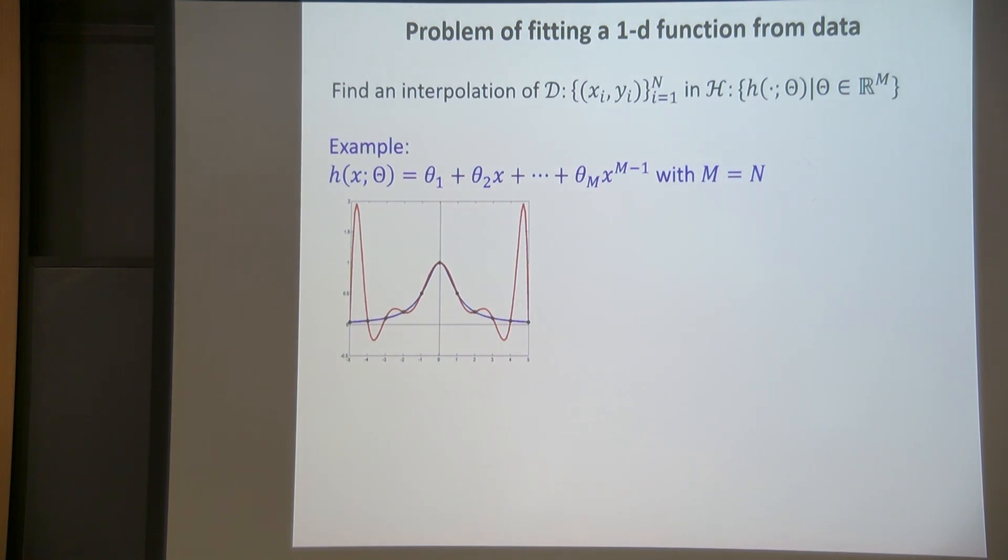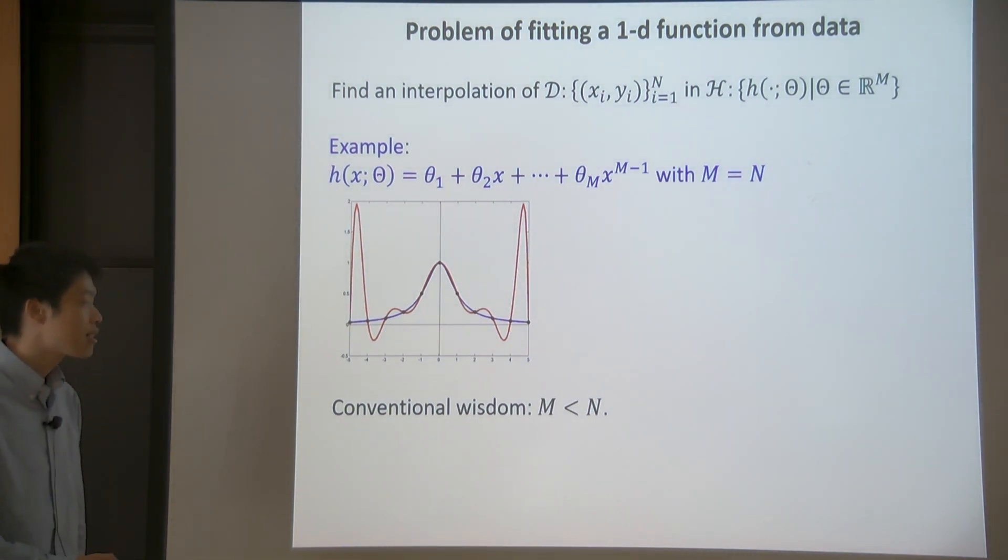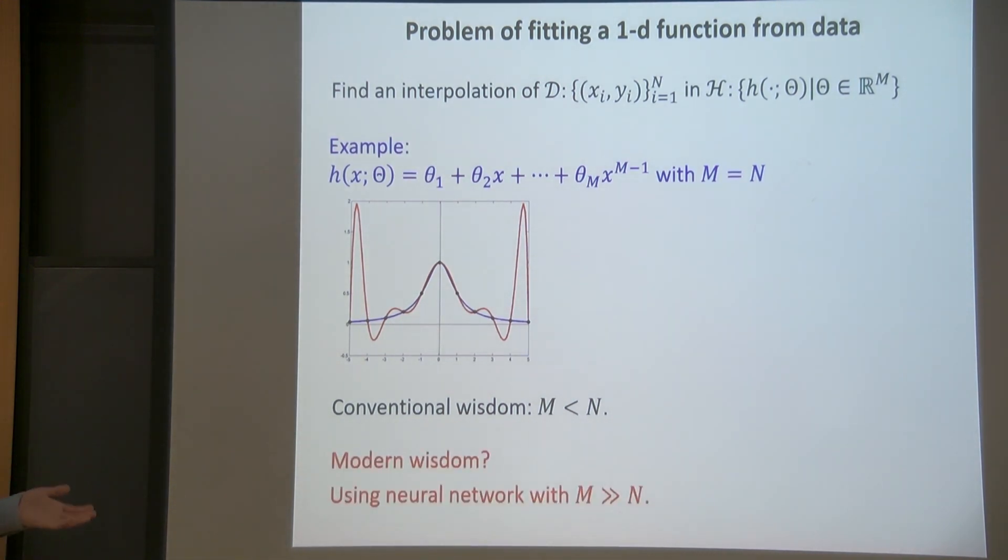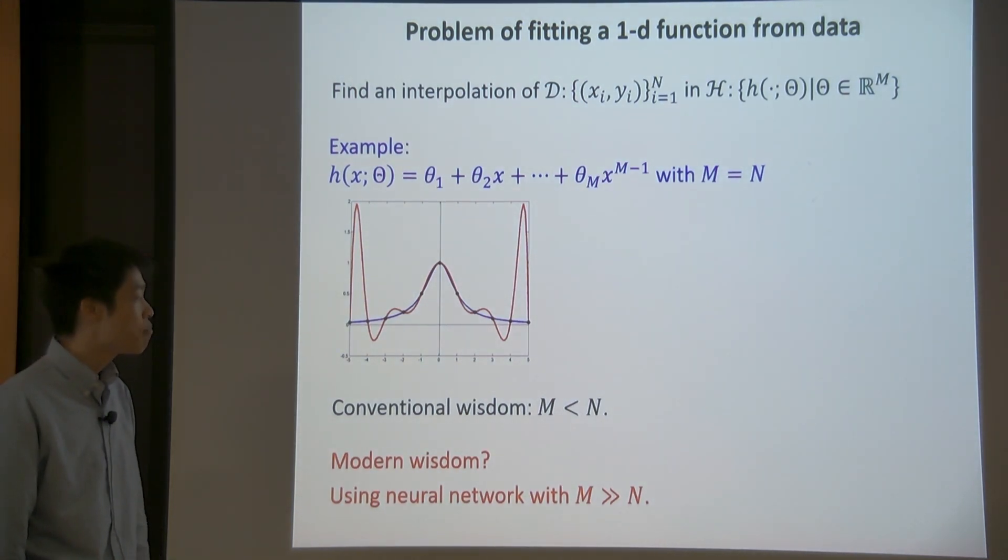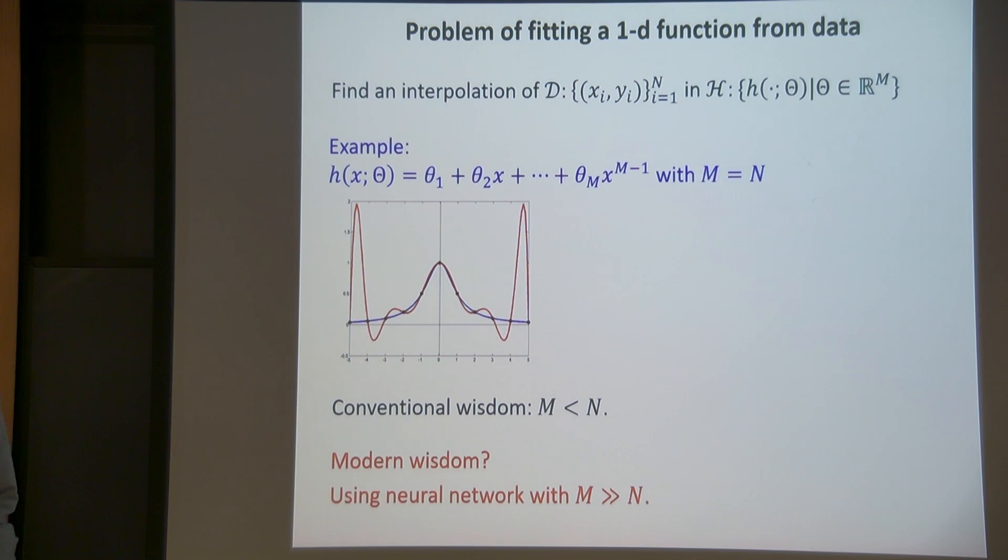Some conventional wisdom to deal with this problem is to consider a much smaller function space, specifically with M much less than N. So we may not be able to fit each data point perfectly, but we can avoid overfitting. Okay, now we have an alternative, which is to use a deep neural network. It's operating a region with M much larger than N, meaning that we are considering a much larger function space. Is it a modern wisdom? We will see.